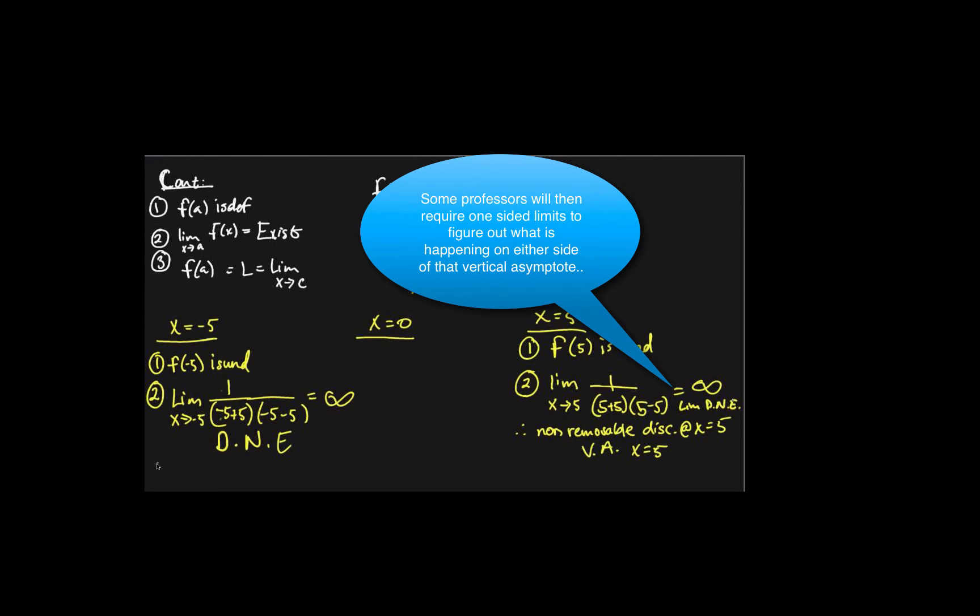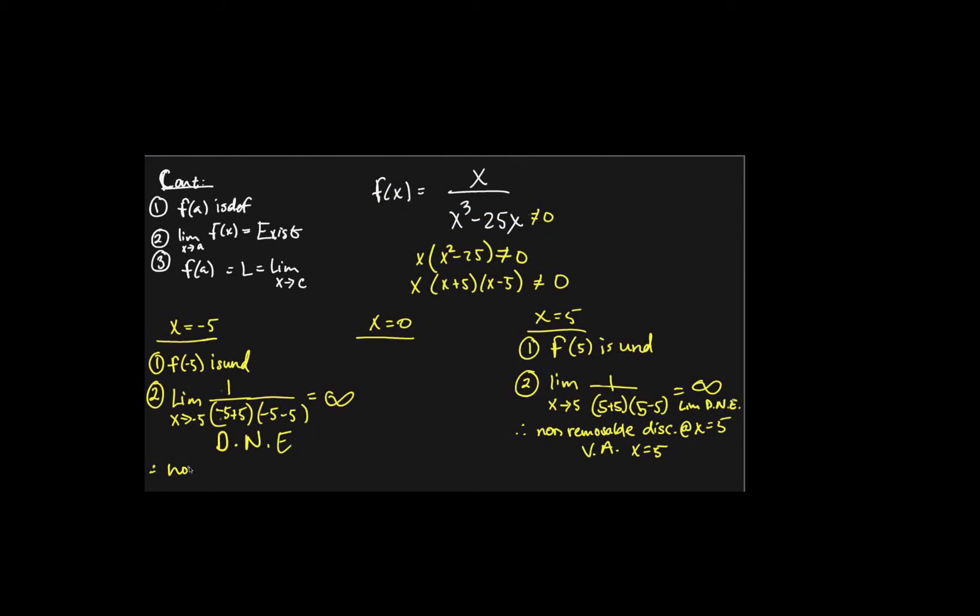And then, therefore, we can say non-removable again, vertical asymptote at x equals negative 5. But, for zero, it's a little different, because here, it's still undefined.